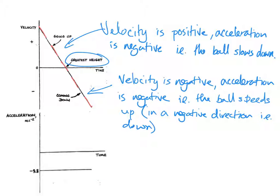So we need to move away from the idea that a line sloping down always means deceleration. You've got to look in more detail: is the value positive or negative, is the line sloping up or sloping down? If velocity is positive and the line slopes up, the object accelerates — that's just like National 5. If velocity is positive but the gradient is negative, the ball slows down. If velocity is negative and acceleration is negative (line sloping down), the ball speeds up in a negative direction. And lastly, if velocity is negative but acceleration is positive (line sloping up), the ball is slowing down in a negative direction.